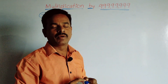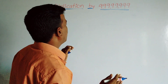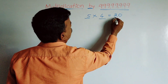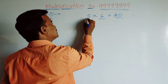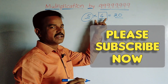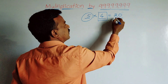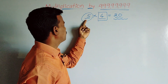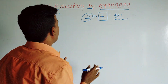To understand multiplicand and multiplier, I'm explaining one example. For example, 5 × 4 = 20. Here three terms are there. The first one is multiplicand, the second one is multiplier, and the third one is the product. So in this multiplication there are three terms: first is multiplicand, second is multiplier, third is product — also called the result.